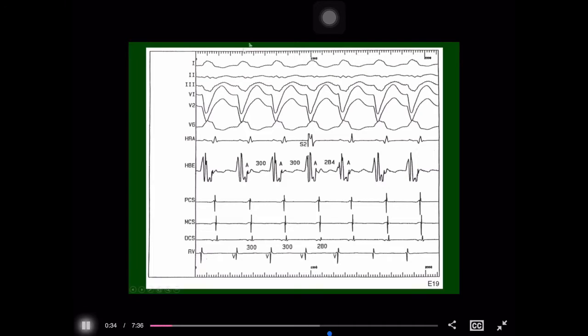During tachycardia, we introduce a premature atrial complex from somewhere in the right atrium and we perturb the tachycardia a little bit. I actually have all those numbers on the tracing. If you look at the tracing, you have the A to A interval in the septum area, 300 milliseconds and also 300 milliseconds when you put in your premature atrial complex.